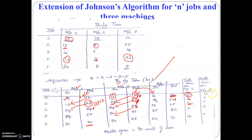Similarly, we determine the idle time on machine 3. Machine 3 starts its operation only at the start of the 16th minute, so for the first 16 minutes machine 3 is idle — writing 16 for the first iteration. Next, machine 3 is available at the end of the 36th minute and the next job also enters at the end of the 36th minute, so 36 minus 36 is 0. In the next iteration, machine 3 is available at the end of the 56th minute and the next job enters at the end of the 56th minute, so 56 minus 56 is 0. Like this, we compute the idle time of machine 3.